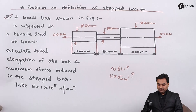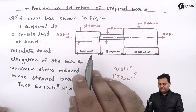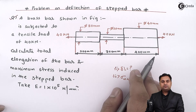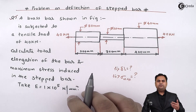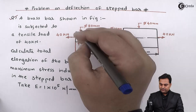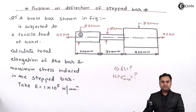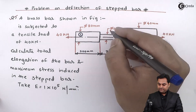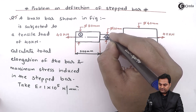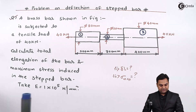In the solution part, we see this stepped bar has three different diameters and three different lengths, so it is better to divide it into three parts. We have the first section, the second section, and at last the third section.